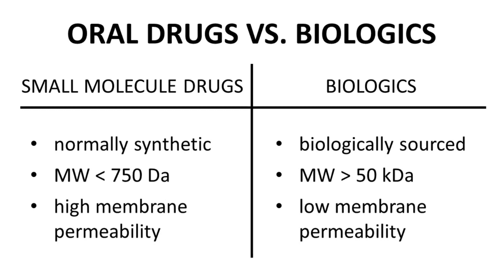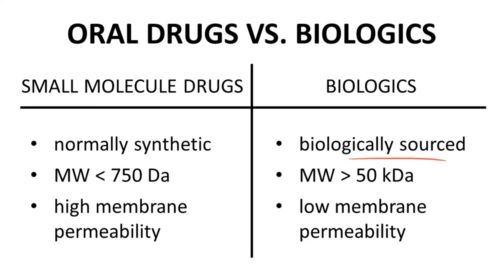We have two columns — the left is for small molecule drugs. Small molecule oral drugs are typically synthetic, wholly made in a lab. They have a relatively low molecular weight, generally less than 750 Daltons, and often quite a bit lower. They often have high membrane permeability. In contrast, biologics are typically proteins or antibodies prepared by living biological systems. Their molecular weight is much higher, generally above 50 kilodaltons, and compounds of this size have negligible membrane permeability.